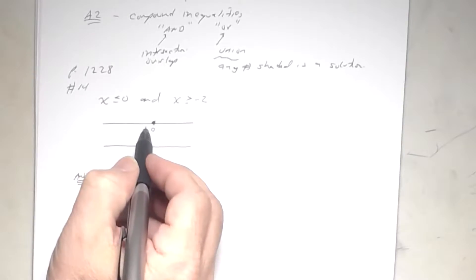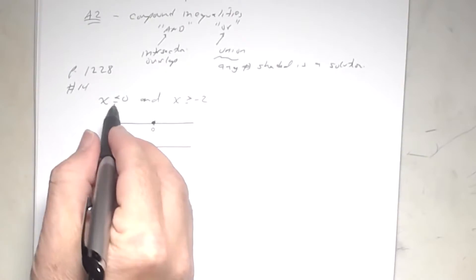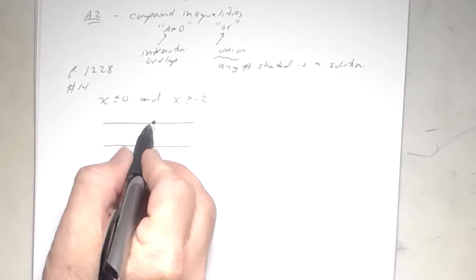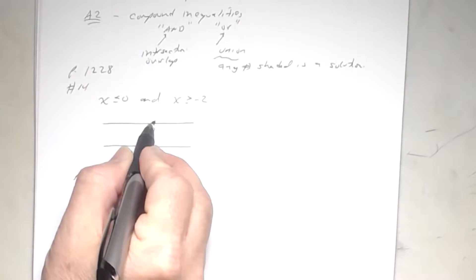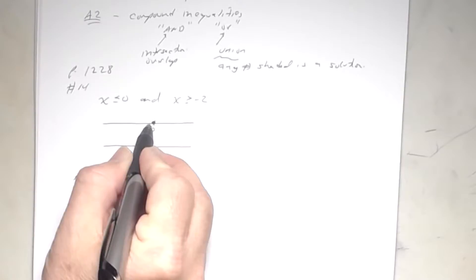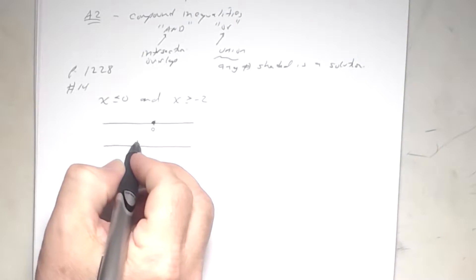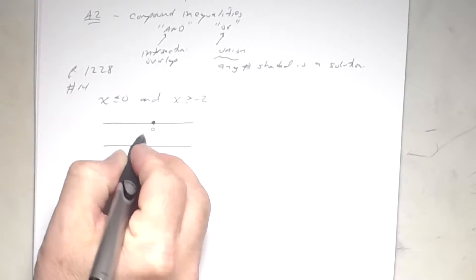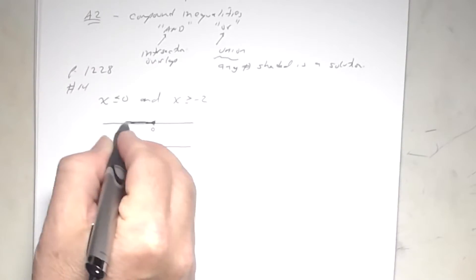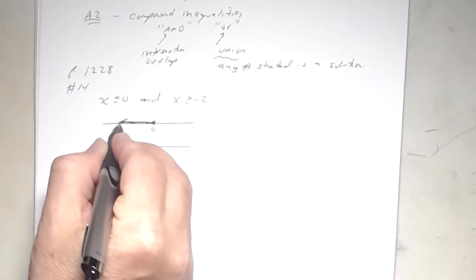On your test Tuesday, darken what's being shaded. For the first inequality — less than or equal to zero — you shade to the left. Make sure you darken the shading clearly, with an arrow.